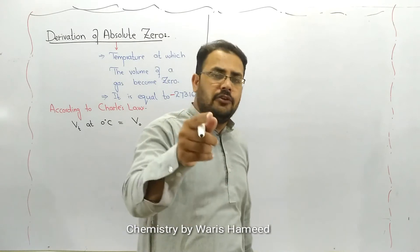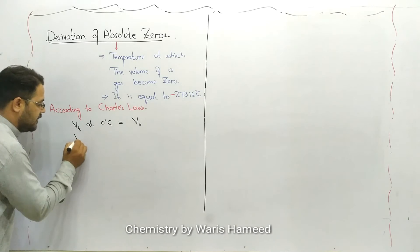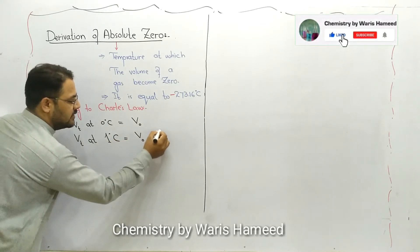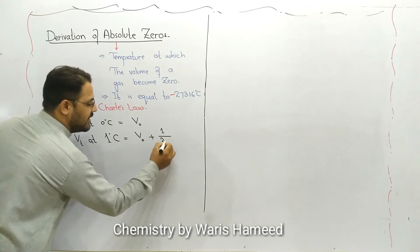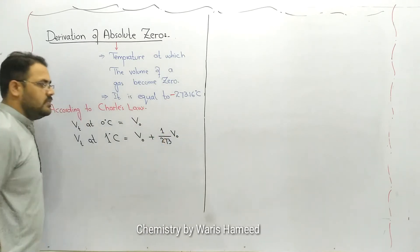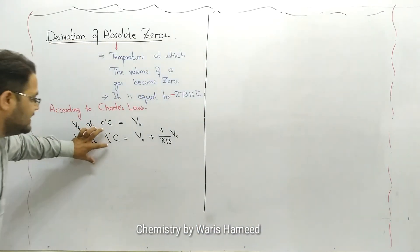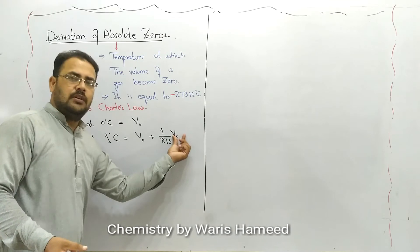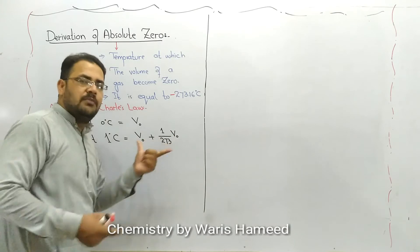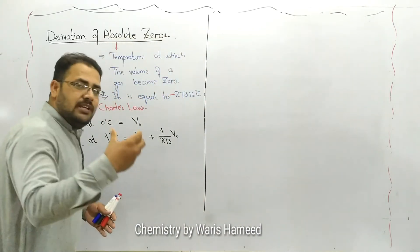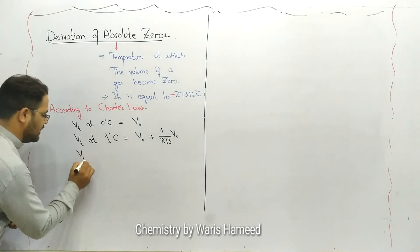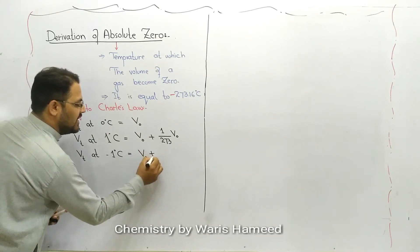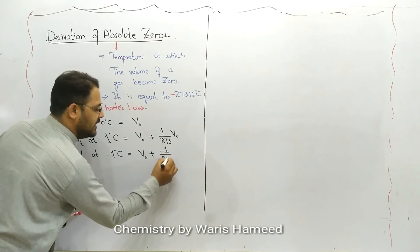V₀ is the volume of the gas at zero degrees Celsius. When we increase the temperature to one degree Celsius, the total volume becomes V₀ plus (1/273)V₀. If we add this factor to the actual volume, we get the total volume. When we decrease the temperature by one degree, V total at minus one degree Celsius equals V₀ plus (−1/273)V₀.